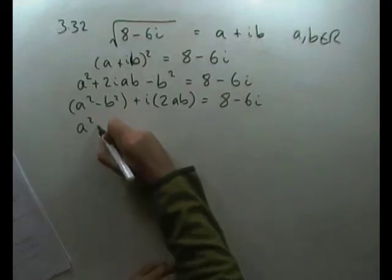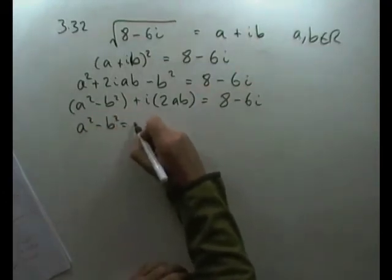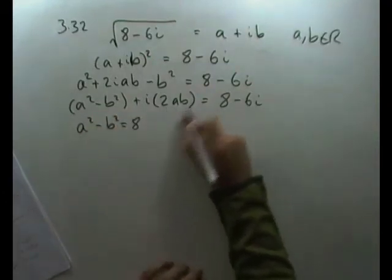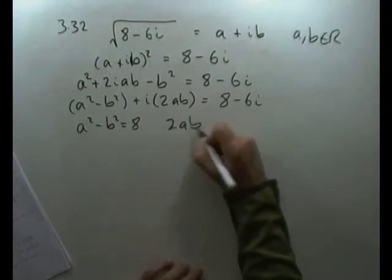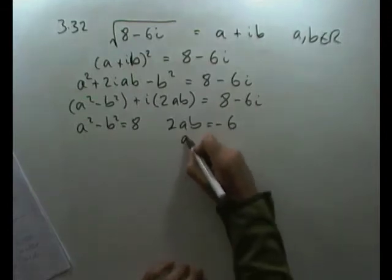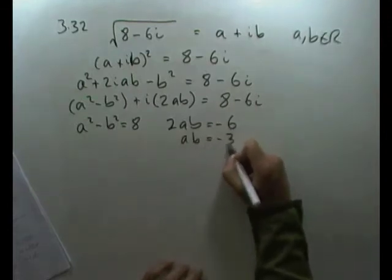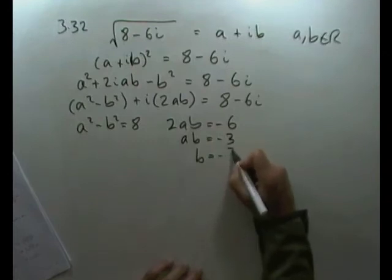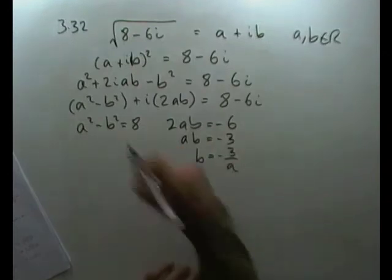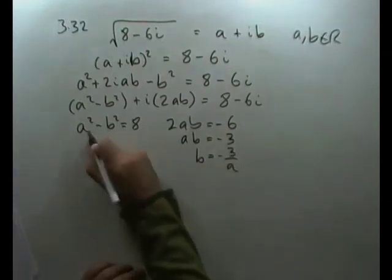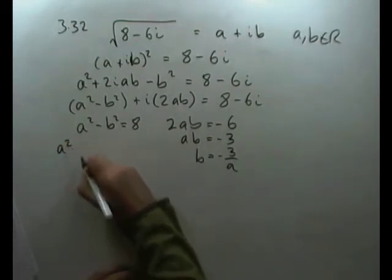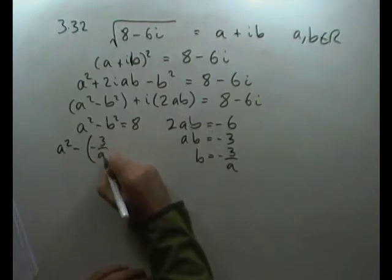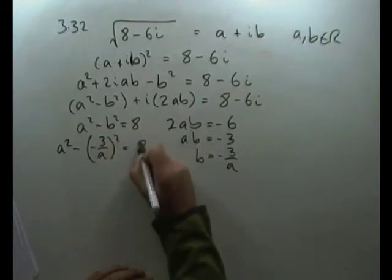This means a² - b² = 8, and also 2ab = -6, or ab = -3, or b = -3/a. I can substitute this into the first equation.